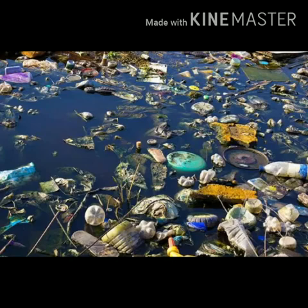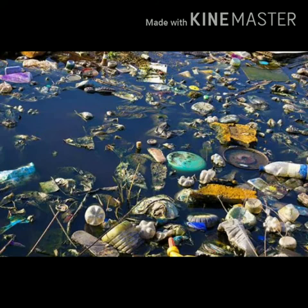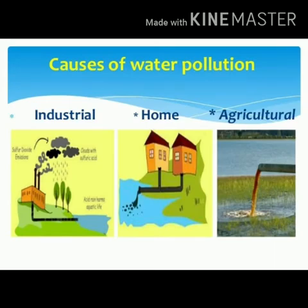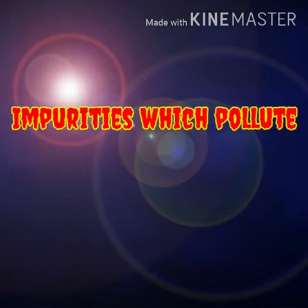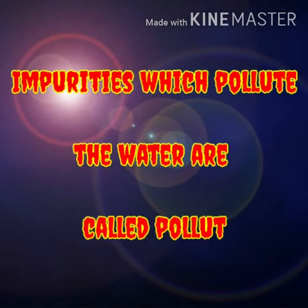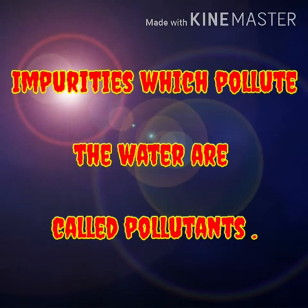Some people even pass urine and fecal matter near it. Industrial waste is drawn directly into water, which pollutes it. Solid waste like polythene causes blockage in the flow of water. When we use water in our homes, agriculture, or industries, it gets mixed up with various impurities. The impurities which pollute the water are called pollutants.